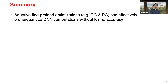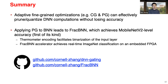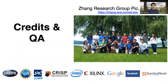To summarize: in this talk I introduced channel gating (CG) and precision gating (PG). We believe these adaptive fine-grained optimizations are a very effective approach to prune and quantize DNNs dynamically without losing much accuracy. We applied PG to BNN to get FRAC-BNN, achieving very good accuracy, binarizing everything, and getting very high speedup on an embedded small device. The code to train CG and PG is open source, and FRAC-BNN is open source — we released the model, the HLS code — everything is reproducible. Thanks to the students, collaborators, and sponsors.